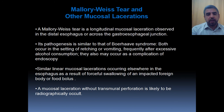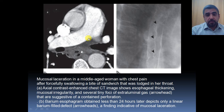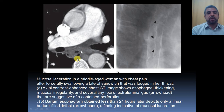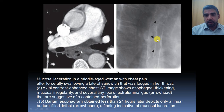For example, in this case — a middle-aged woman with chest pain after forcefully swallowing a bite of sandwich lodged in her throat — on the axial CT you can see air bubbles on both sides. This is an extra-luminal air bubble, and this is the esophagus proper, indicating a contained perforation. There are no other air bubbles surrounding the esophagus and no signs of non-contained perforation. A barium esophagogram performed less than 24 hours later detects only a linear barium filling defect — this is the mucosal line indicating mucosal laceration.